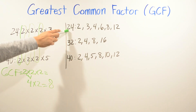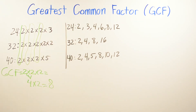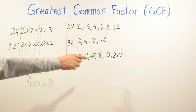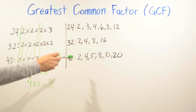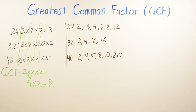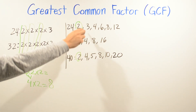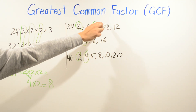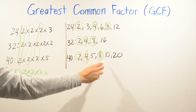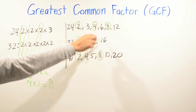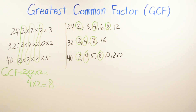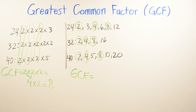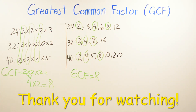Using the listing method: for 24, factor pairs include 2 times 12, 3 times 8, 4 times 6. For 32: 2 times 16, 4 times 8. For 40: 2 times 20, 4 times 10, 5 times 8. We circle all values that appear in all three lists: 2, 4, and 8 appear in each. Since we need the greatest common factor, the answer is 8 — the same result as with prime factorization.